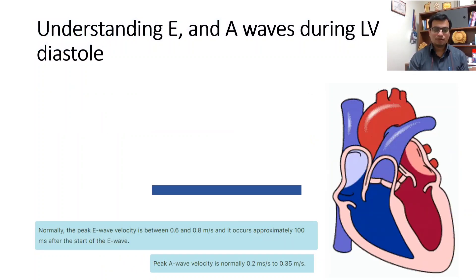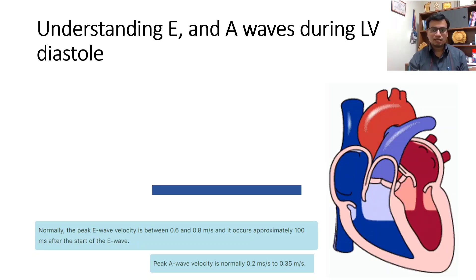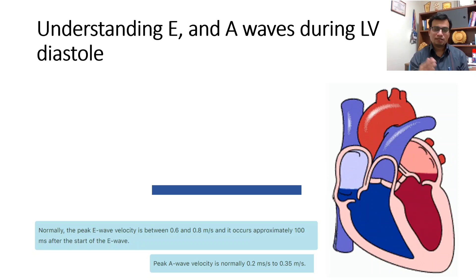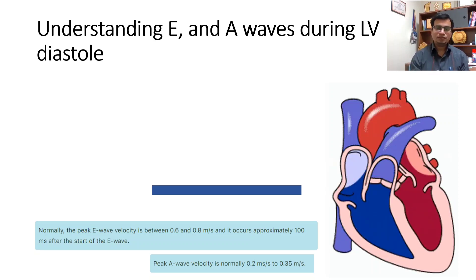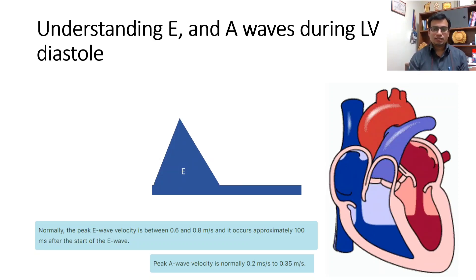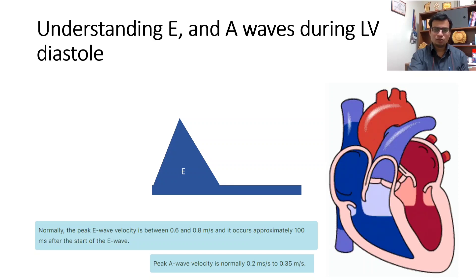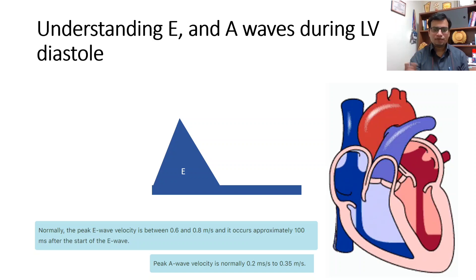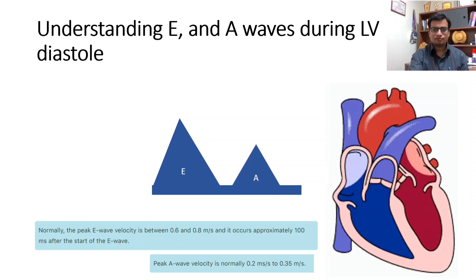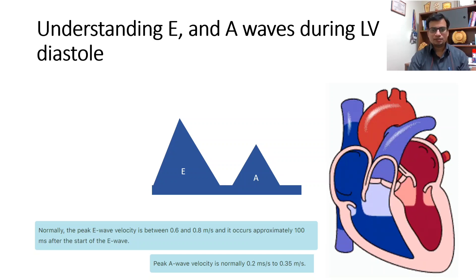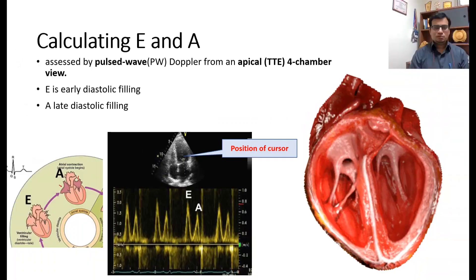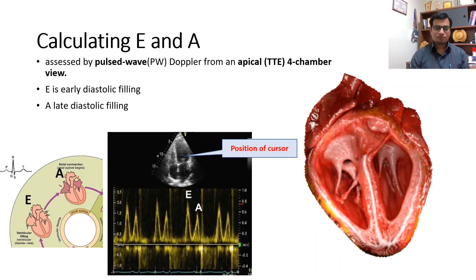During isovolumic relaxation, LV pressure falls rapidly, and when it has declined below the atrial pressure, a pressure gradient develops between the atrium and ventricle. The mitral valve opens and the ventricle fills rapidly, giving rise to the E wave velocity. During diastasis, the left atrial and left ventricular pressures are almost equal and transmitral flow occurs at a very low rate. Finally, atrial contraction occurs which leads to the A wave. A velocity is due to atrial contraction in the later phase of diastolic filling.